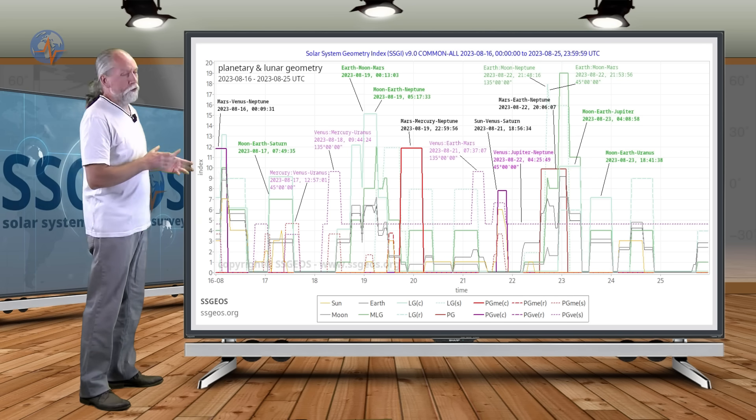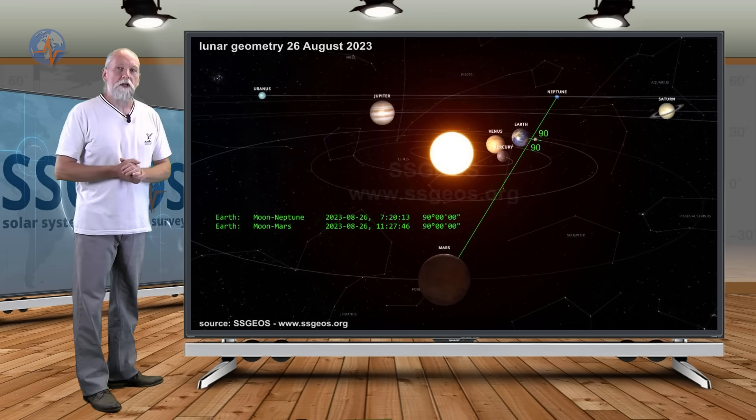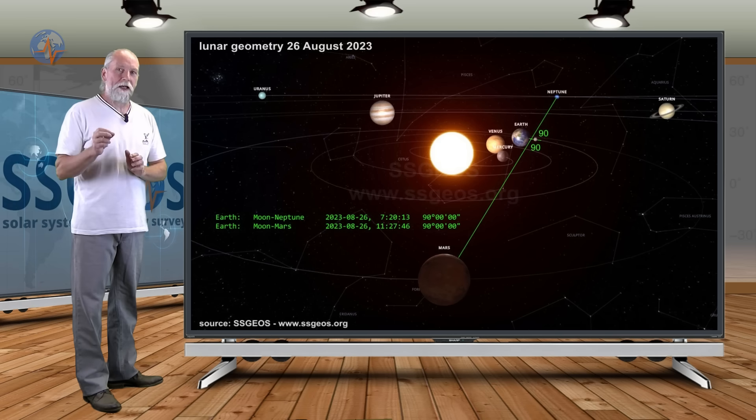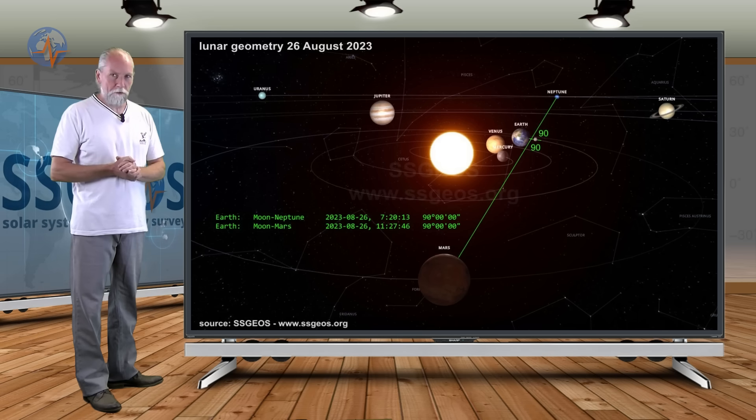And what you do not see on this graph here is that on the 26th of August there will be very critical geometry again with Mars and Neptune. When the Moon makes opposite right angles with both outer planets.